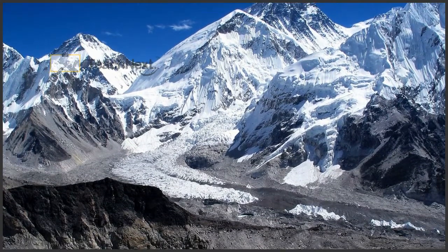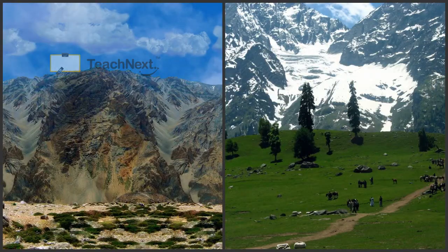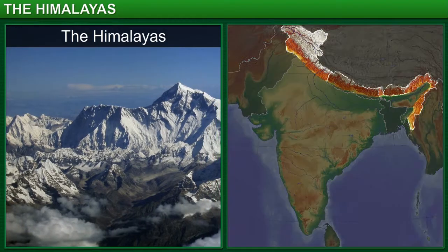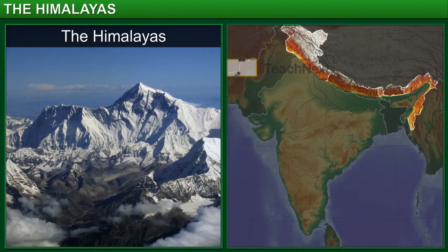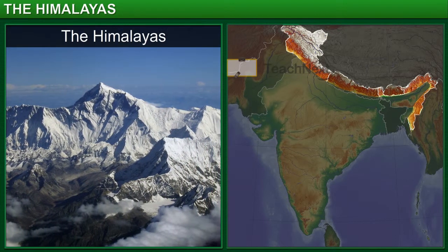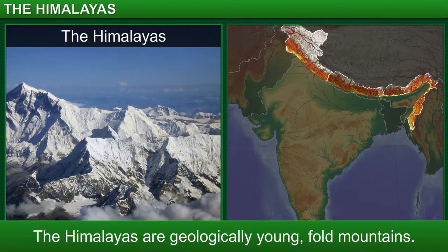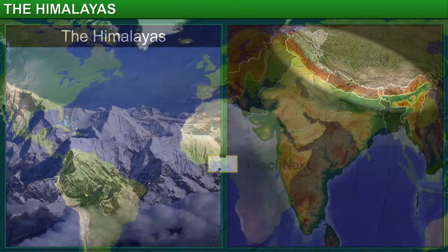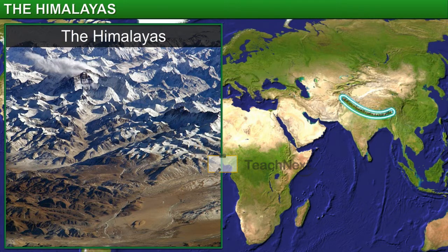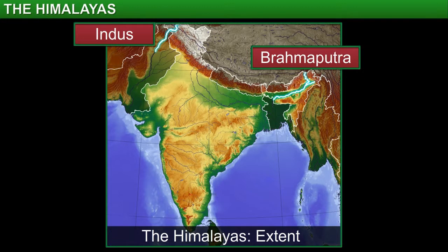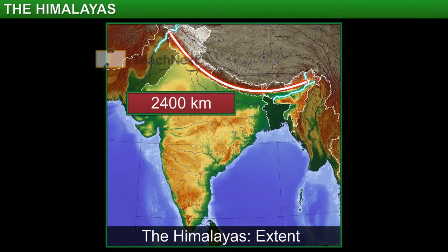In this module, you will learn about one of these groups, the Himalayan mountains. The Himalayas are fold mountains that cover the northern border of India. They are geologically young as compared to other mountain ranges. The Himalayan range is the highest and the most rugged mountain range in the world. It extends from the river Indus in the west to the Brahmaputra in the east, forming an arc of about 2,400 kilometers.